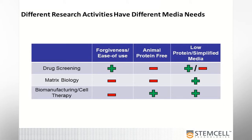For bio manufacturing and cell therapy, if you're scaling up, forgiveness and ease of use may not be as important — procedures are well locked down and you may not need a lot of tolerability in the media for mistakes. However, animal protein free would be important because you're probably looking at clinical-type applications, and a simplified media is nice because you can easily qualify your reagents for scale up.